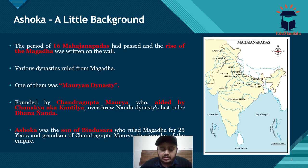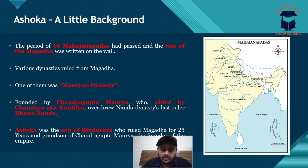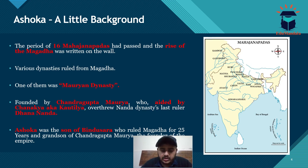These 16 Mahajanapadas were states controlling fairly large territories. They had sophisticated administration systems, collected taxes through agriculture, and had standing armies. The state had matured to what we recognize today, though it was not democratic — it was monarchical. Some republican territorial areas existed, but mainly monarchies controlled these Mahajanapadas.